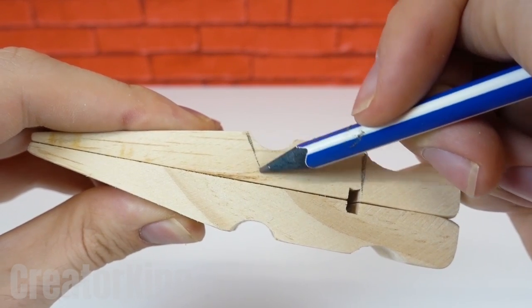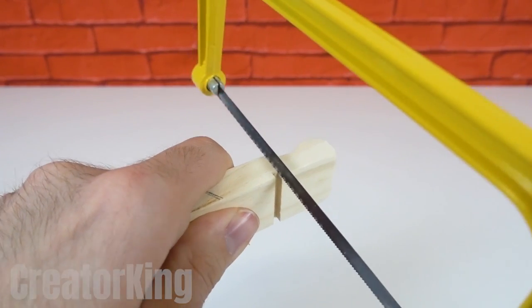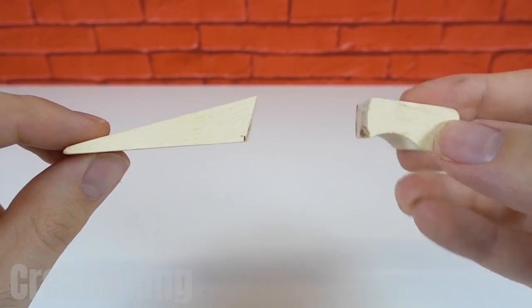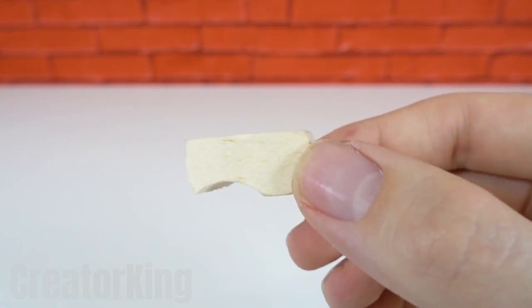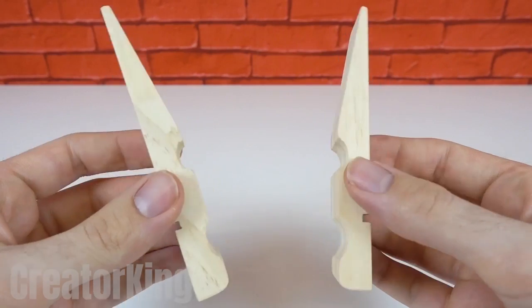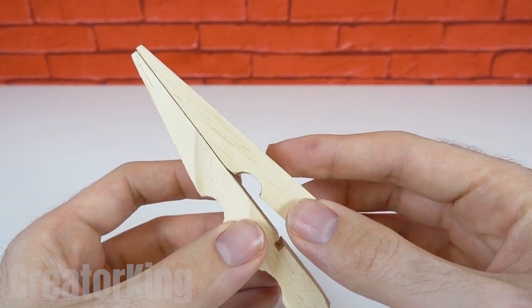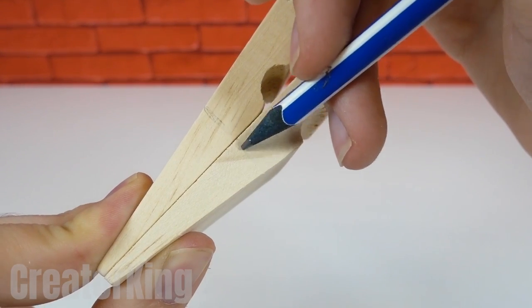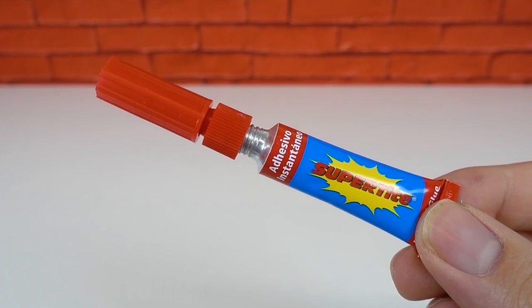With a pencil mark a vertical line at the top of the groove and another diagonal line using the semicircle shaped hole as a reference. Then cut it with the saw. Disassemble another big clothespin and join the narrower ends like this. Then with a pencil mark a line through both pieces.